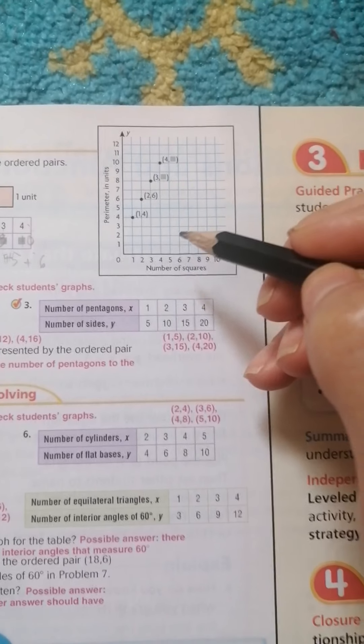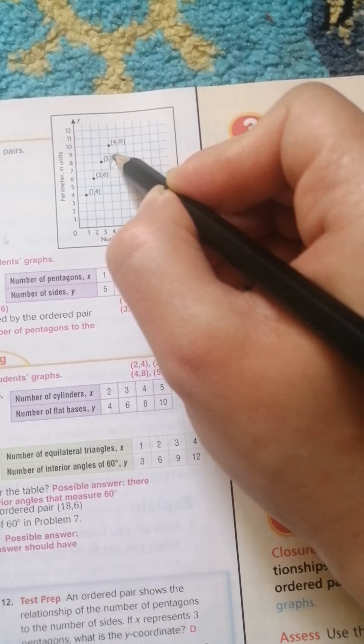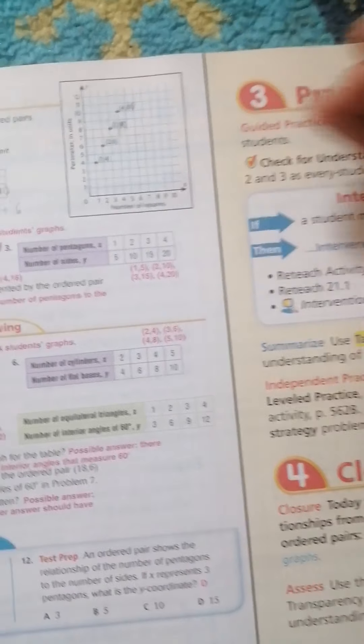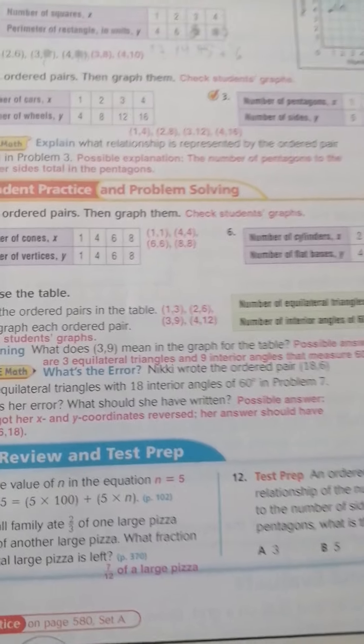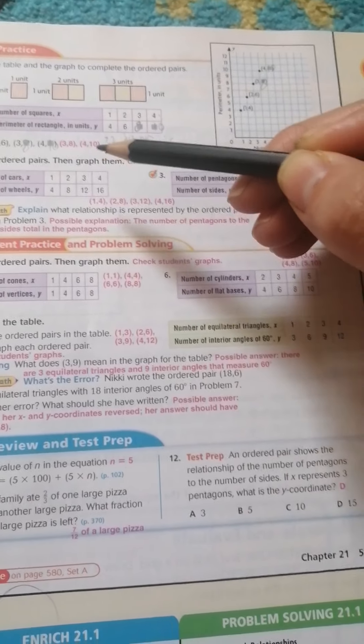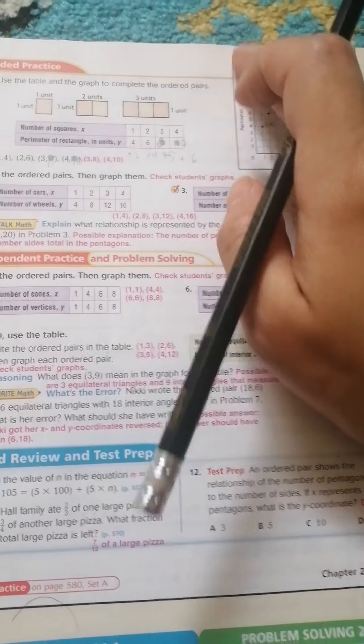Then in a graph. Write 3 and 8. Look at here. 8. Yes. Excellent. And 4 and 10. You can understand here. Write the ordered pair. Then graph them. 1, 4, 2, 8, 3, 12 and 4, 16. Just make a graph.